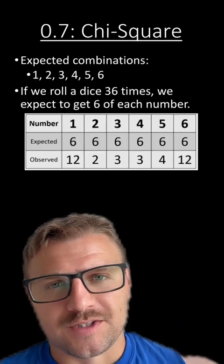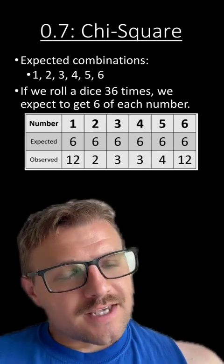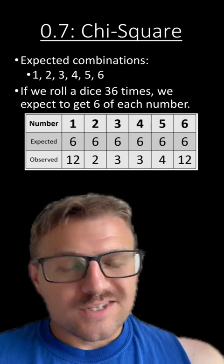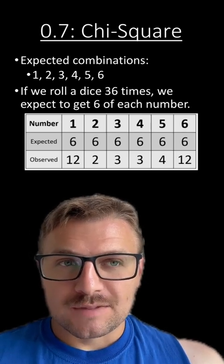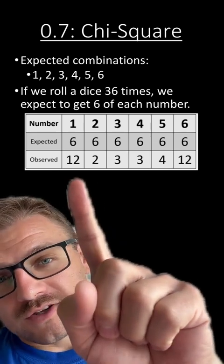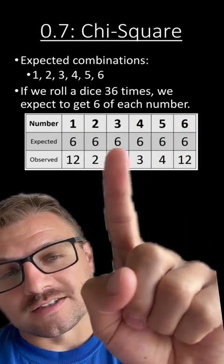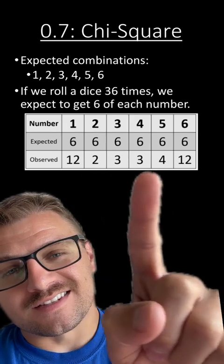Let's do another quick practice problem using the chi-square. You roll a dice 36 times. Now remember, a dice has six sides. So if you roll a dice 36 times, you should expect to get each number six times. However, these are the values that you get for each of the numbers. You can see 1, 2, 3, 4, 5, 6. You should get six of each of the numbers, but you get this data. Again, is this data in the realm of possibility?